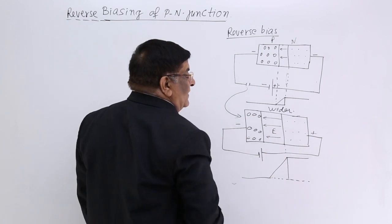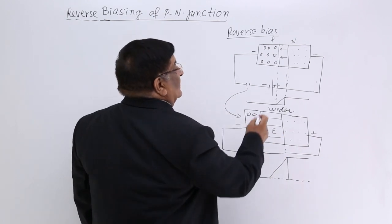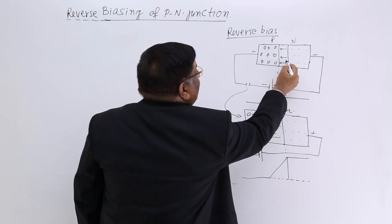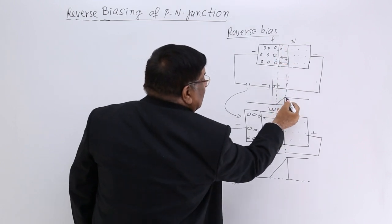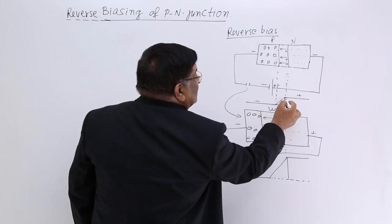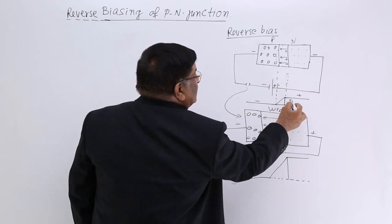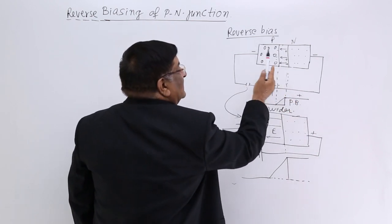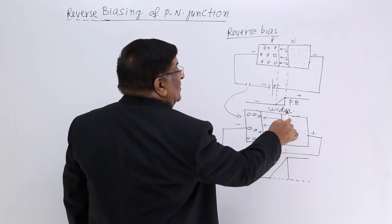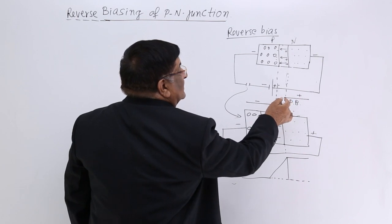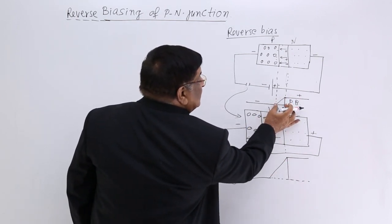No current will flow here. Another way to look at it: there was a potential barrier created here. One side is at a higher potential and the other is at a lower potential, and the difference is known as the potential barrier. Because of this difference, the electron cannot jump across. This is the potential barrier — the electric field that is the potential gradient.